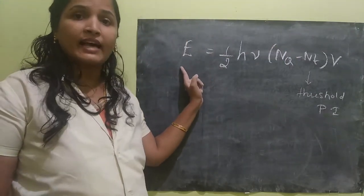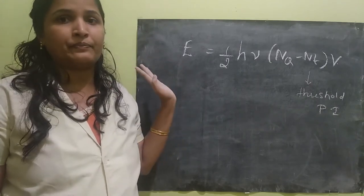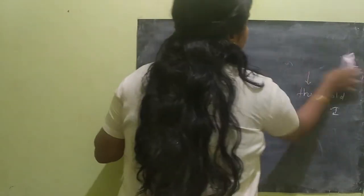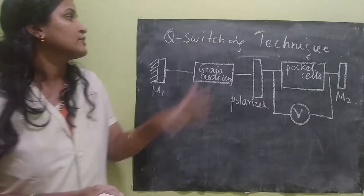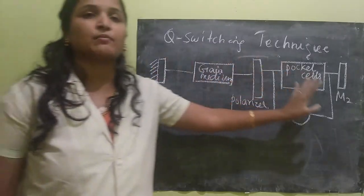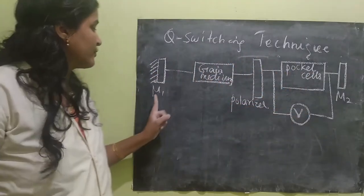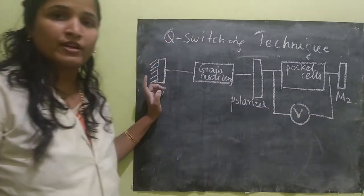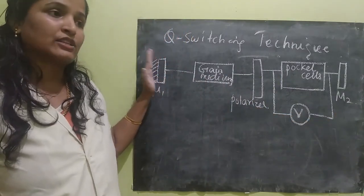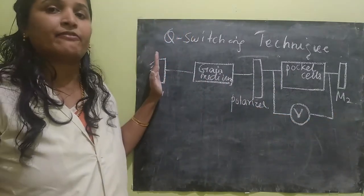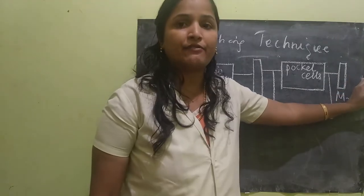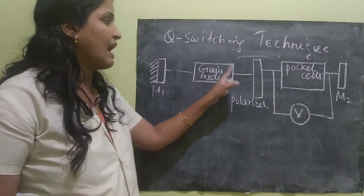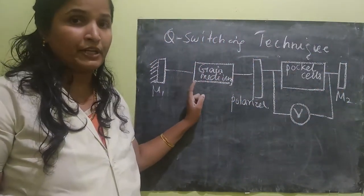If the energy is high, the power is also very, very high. Now let's study it in detail. For Q-switching, this is the basic block diagram. Here we have M1 mirror and M2 mirror. M1 mirror is completely sealed, that is fully reflecting.